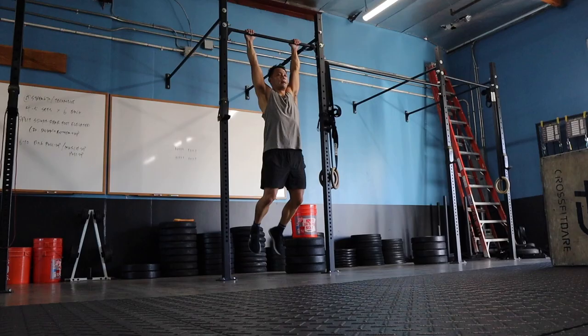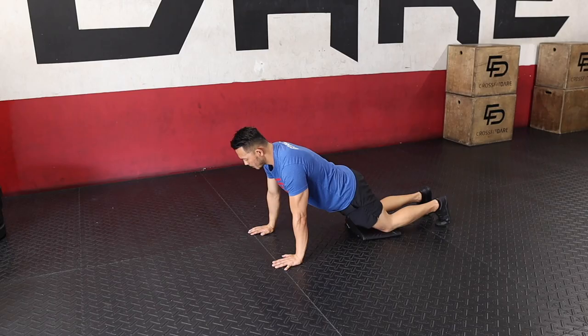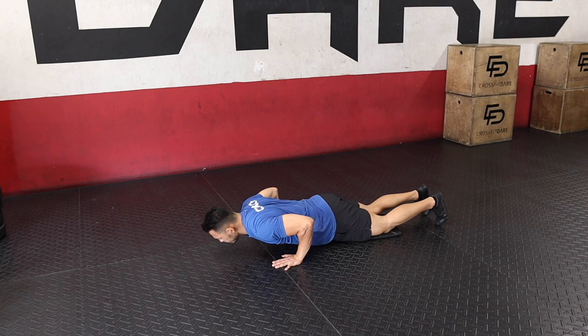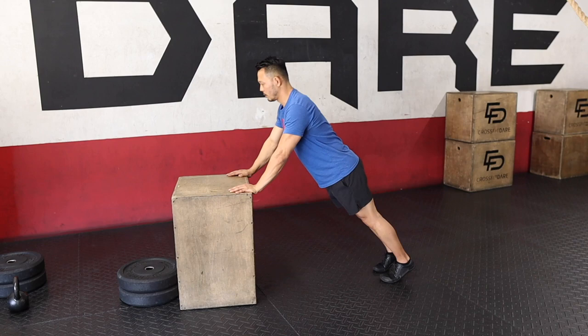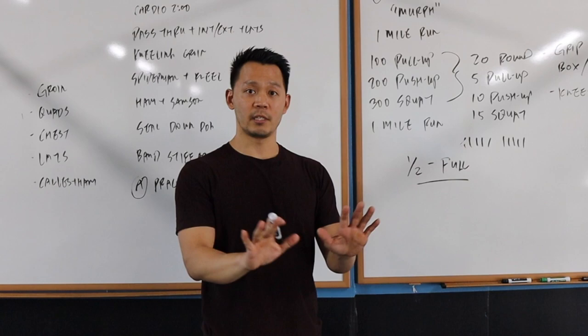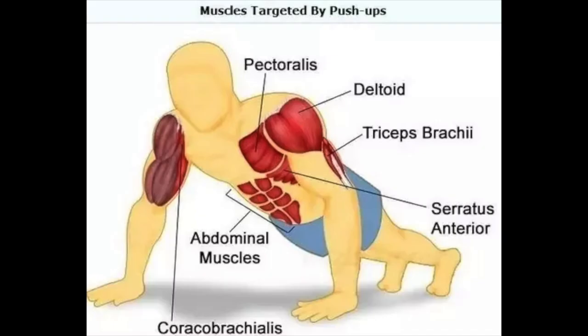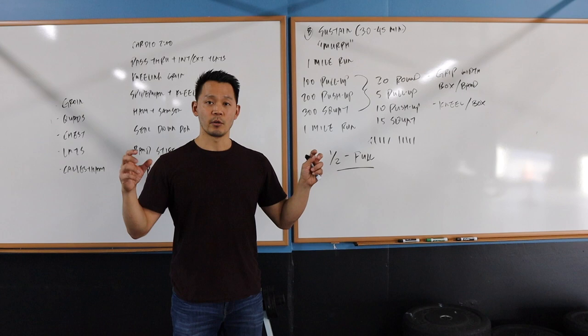If you cannot do push-ups on the ground, we had members do them either kneeling or on boxes. We also had the option to do push-ups with different grips - you're always using chest, shoulders, and arms, but with different widths you're prioritizing different areas. For squats, we have variations in stance width: feet closer, wider, or very wide.